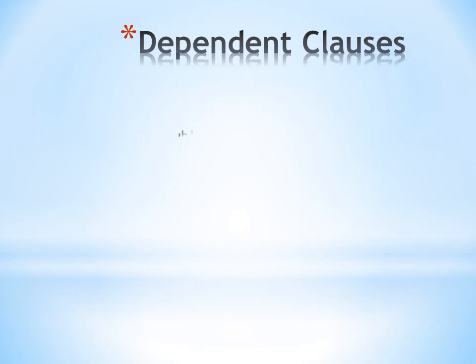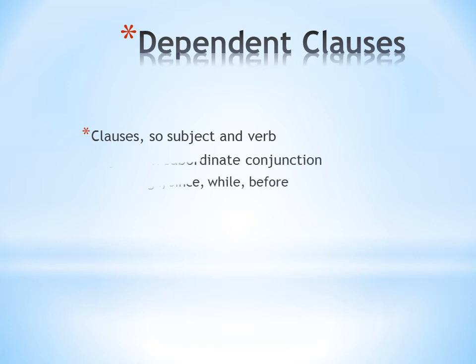Dependent clauses are a little bit different. They're clauses, so they have a subject and a verb, just like independent clauses do. The difference is, they begin with a subordinate conjunction. These are words like although, since, while, and before.